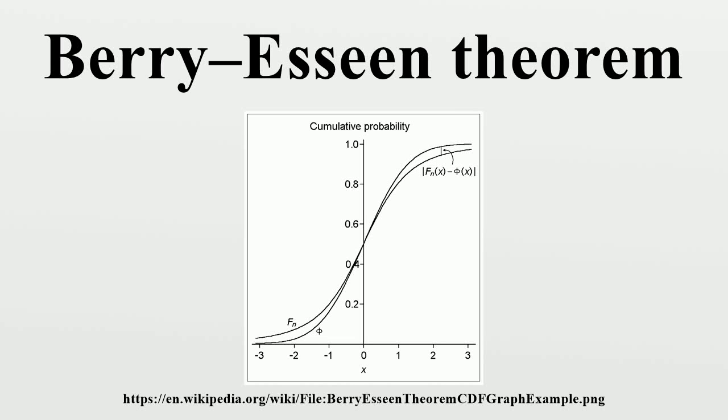In probability theory, the central limit theorem states that, under certain circumstances, the probability distribution of the scaled mean of a random sample converges to a normal distribution as the sample size increases to infinity.